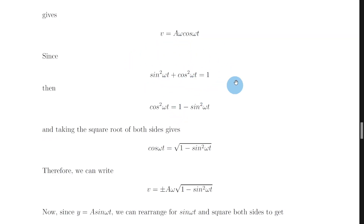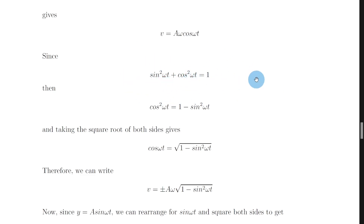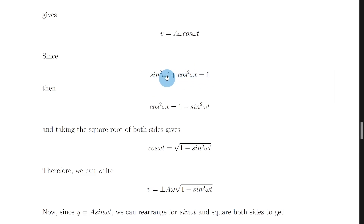Now we want to think about the trig identity — which you might remember from maths — sine squared x plus cos squared x equals 1. This is also given on the additional relationship sheet in the exam. So we have sine squared of omega t plus cos squared omega t equals 1, since we're using omega t rather than x.